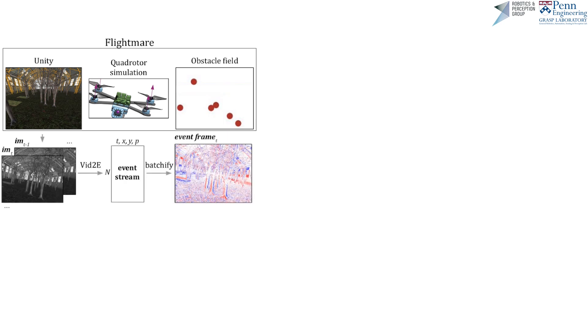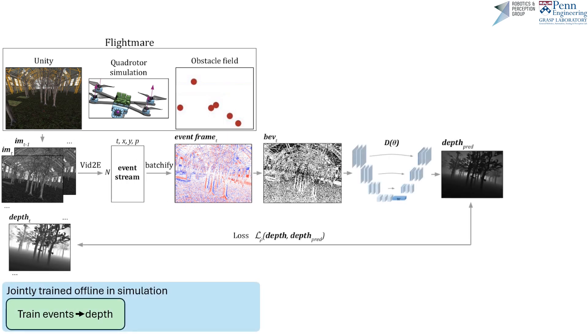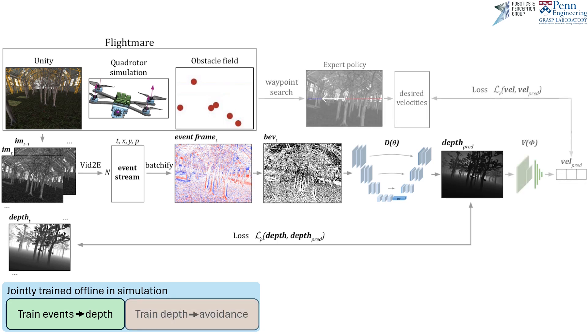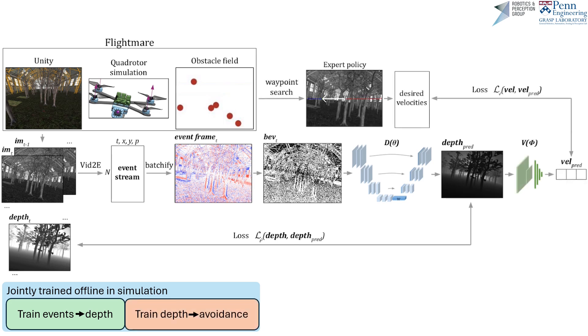To solve this problem, we offline train events to action in two steps. A privileged expert policy flies through the FlightMare simulation environment. We use VID2E to generate estimated events from collected image sequences, batch events, and form a binary event mask, from which we train an events-to-depth perception network. We jointly train a depth-to-velocity avoidance network from the expert policy's velocity commands.